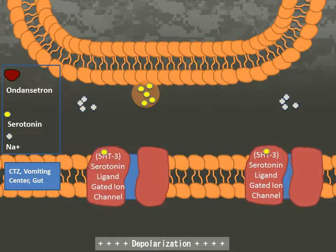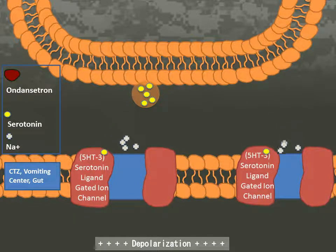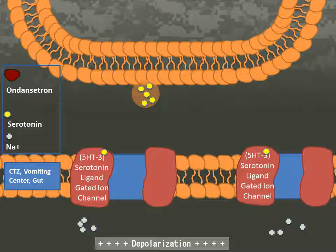The binding of serotonin to 5-HT3 receptors opens ligand-gated ion channels. This causes an influx of sodium along a concentration gradient that allows depolarization of afferent nerve fibers leading to the chemoreceptor trigger zone, resulting in the sensation of nausea or the occurrence of emesis.